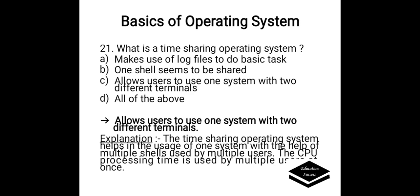What is the time-sharing operating system? Option A. Makes use of log files to do basic tasks, B. One shell seems to be shared, C. Allows users to use one system with two different terminals, D. All of them. Correct answer is C, allows users to use one system with two different terminals. The time-sharing operating system helps in the usage of one system with the help of multiple shells used by multiple users. The CPU processing time is used by multiple users at once.